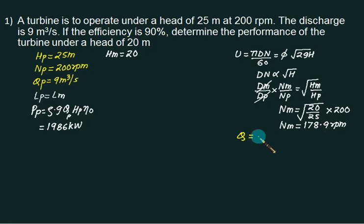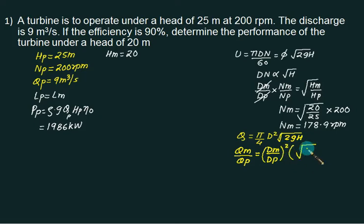Second equation you can use for Q equals area times velocity, that is π/4 times d squared times square root of 2gH. Don't remember any equation, use a very simple format. So Q model upon Q prototype will be equal to d model upon d prototype whole squared times square root of H model upon H prototype. Substitute all values and you can obtain Q of model. Q of prototype is 9. Ratio equals 1 because they are same, we are using for both cases. Hm equals 20, Hp equals 25. So Qm equals 8.04 meter cube per second.